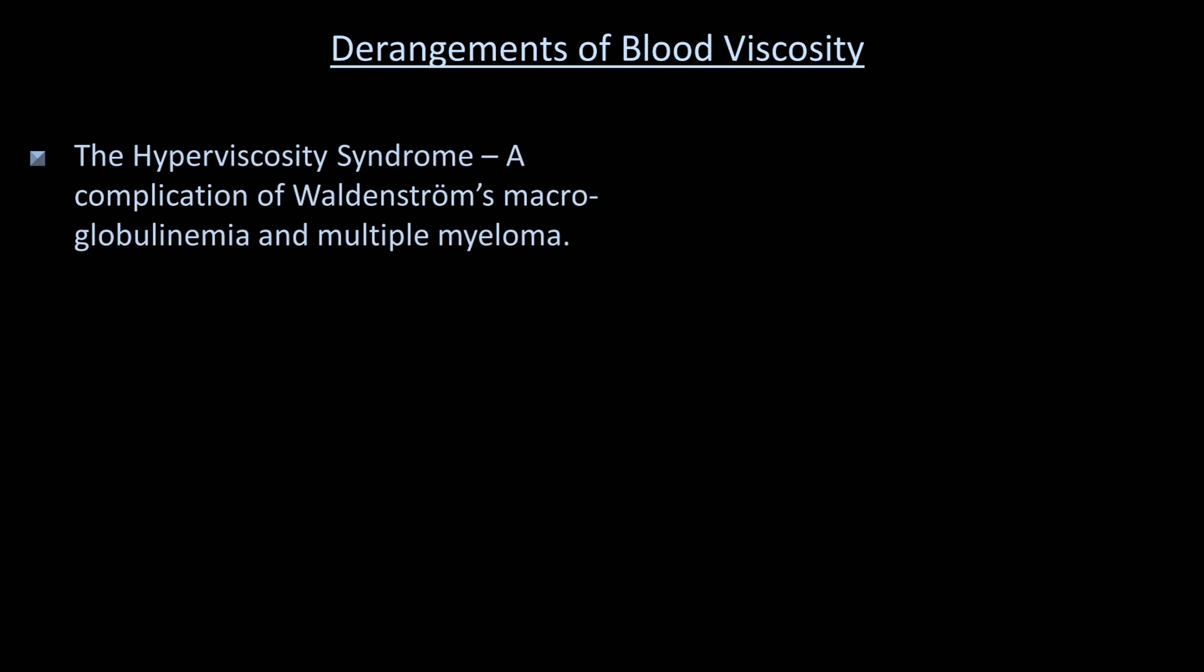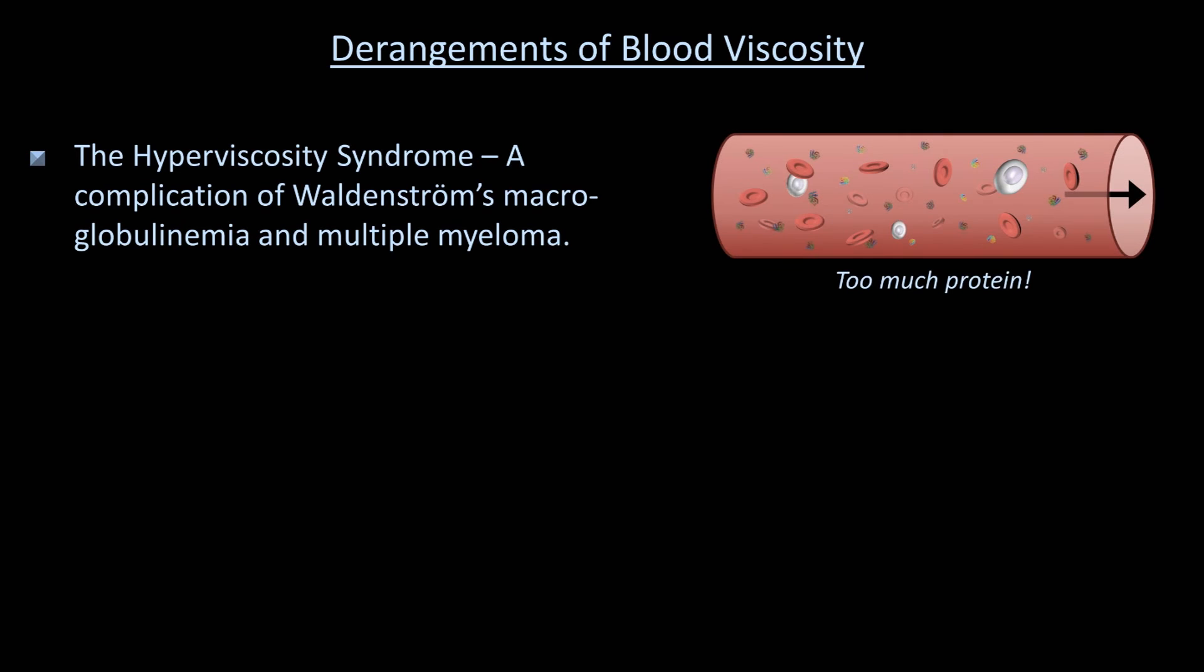The first is known as the hyperviscosity syndrome, which is a complication of conditions such as Waldenstrom's macroglobulinemia and multiple myeloma, in which the underlying problem is too much circulating plasma proteins, usually either fibrinogen or immunoglobulins, represented here by the little rainbow specks. The only way to get rid of them is plasmapheresis, in which blood is removed from the body, filtered to remove substances of large molecular weight, such as proteins, and reintroduced back into the body. This buys time for chemotherapy to provide a more definitive long-term treatment.